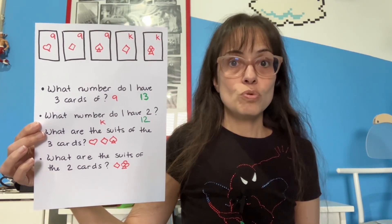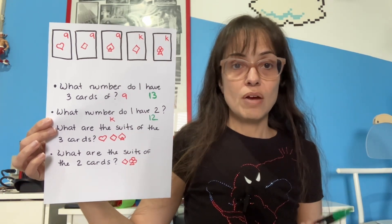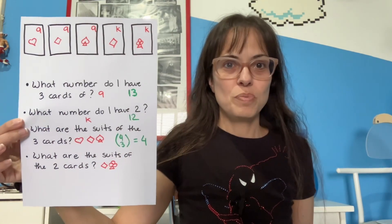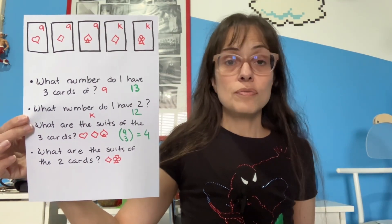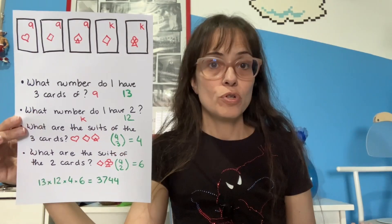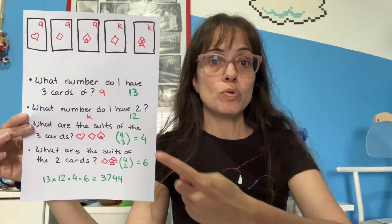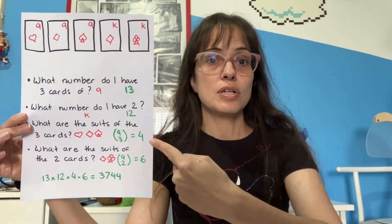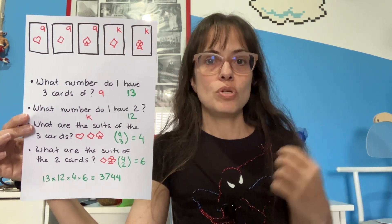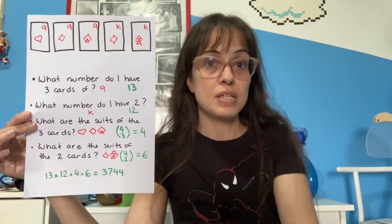When I asked the suits of the three nines, there are four suits and I have to choose three of those — four choose three, which is four. And out of the four suits, I also have to choose two suits for the kings — four choose two is six. The final answer is the product of all these numbers: 13 times 12 times 4 times 6.